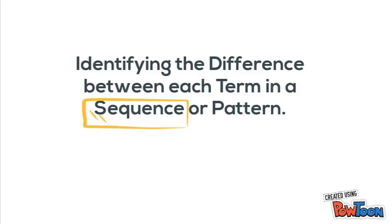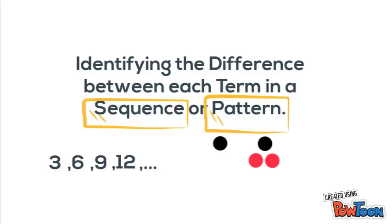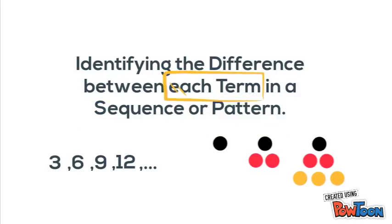First, let's talk about what some of these words mean. A sequence is a list of numbers that follows a certain rule, and a pattern is a visual sequence that follows a certain rule. The terms of a sequence or pattern are the individual numbers or pictures. And finally, the difference is the amount of change between each term.